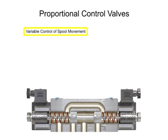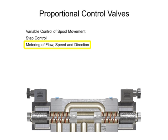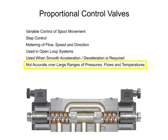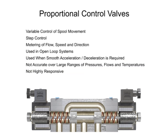Proportional control valves allow for variable control of spool movement, which allows more precise control and metering of flow, speed, and direction. Most valves of this design are used in open-loop systems to smoothly accelerate and/or decelerate an actuator or cylinder. The proportional control valve allows for a simpler hydraulic circuit, but it is not accurate over a broad range of pressures, flows, and temperatures, and neither are they highly responsive. Proportional valves offer a variety of machine cycles which can safely be operated at greater speeds, resulting in improved machine cycle times and production rates.